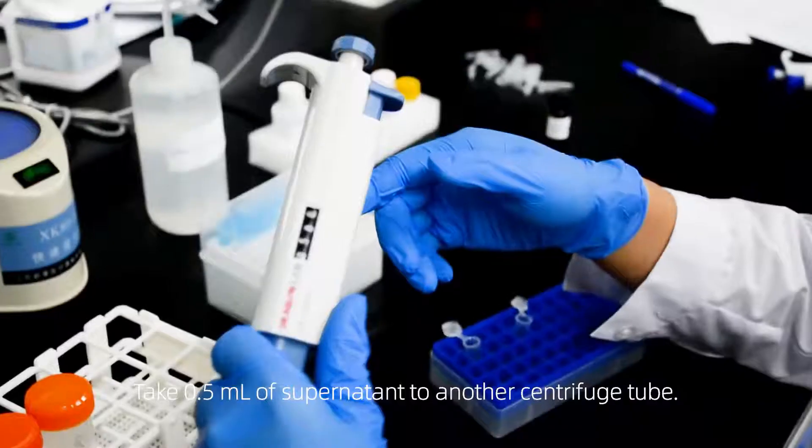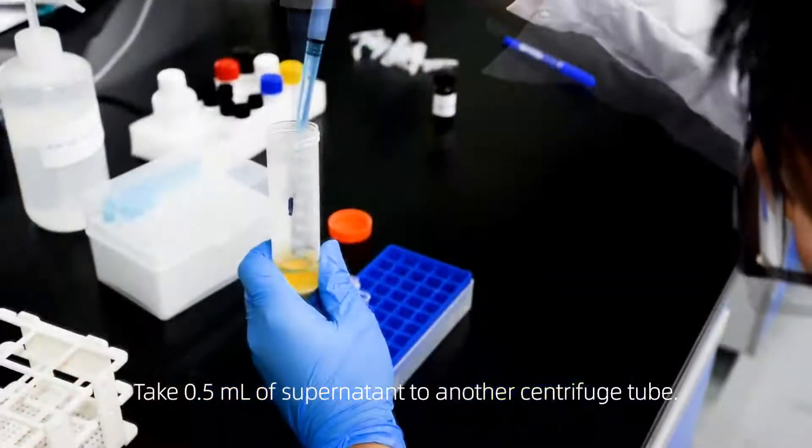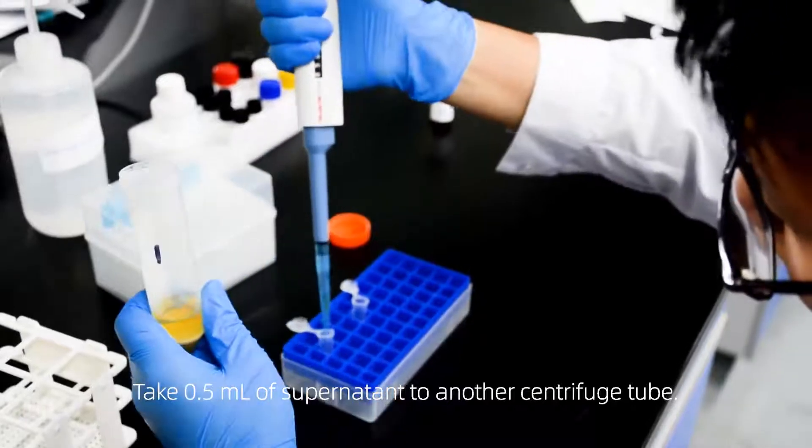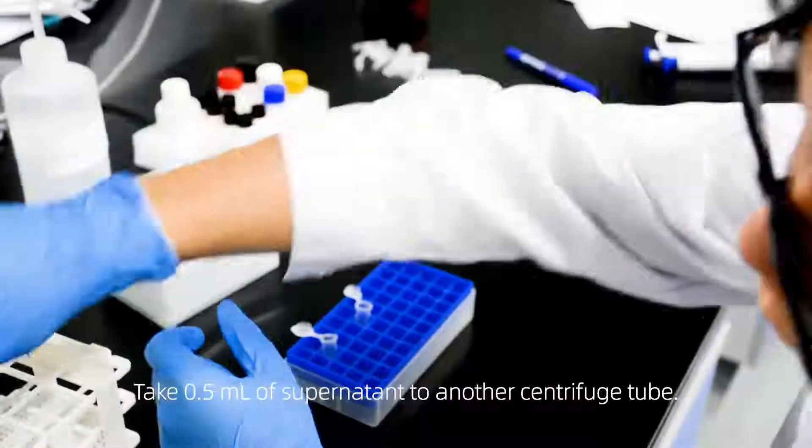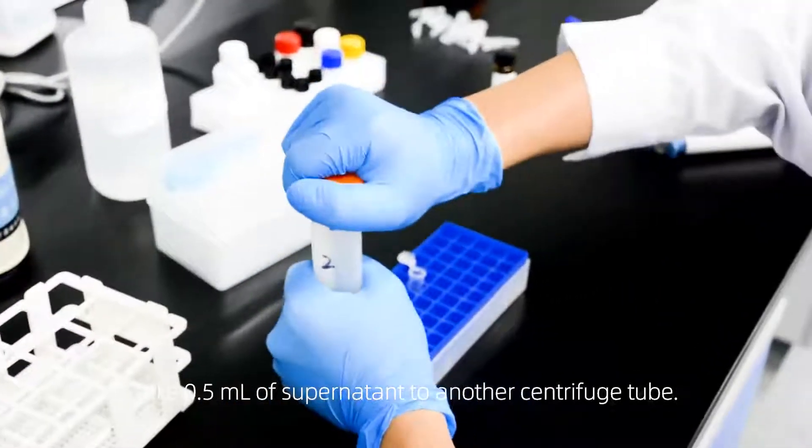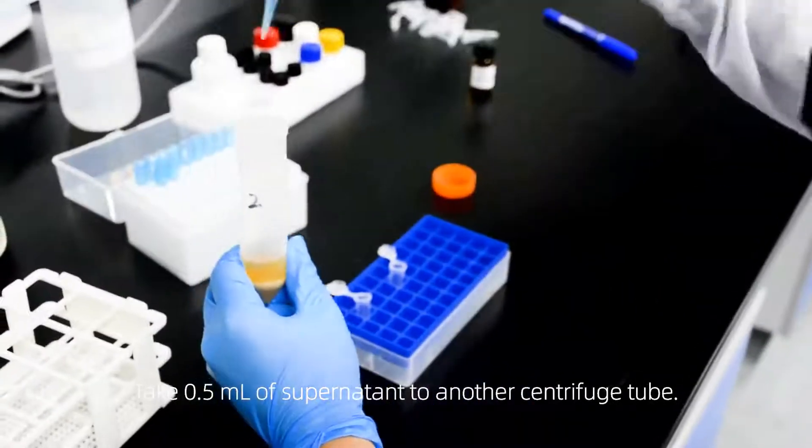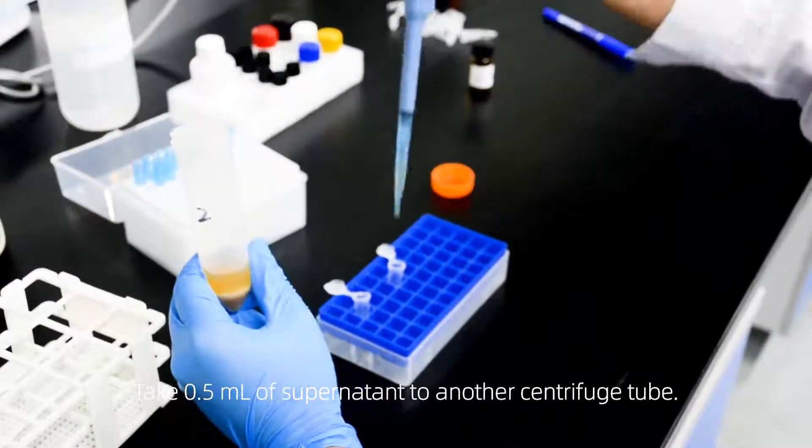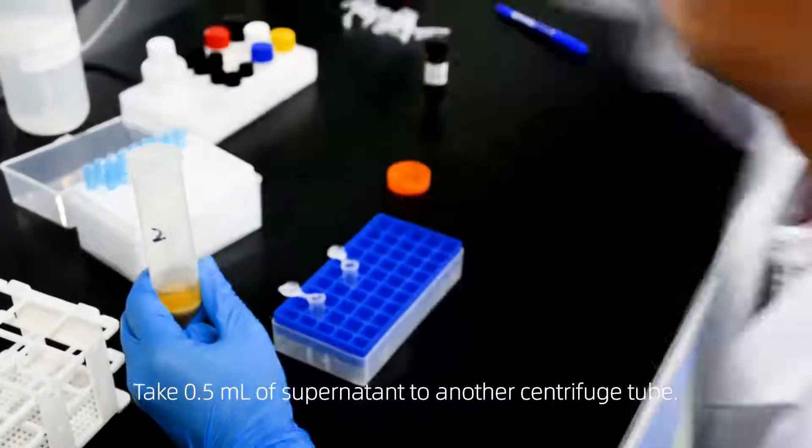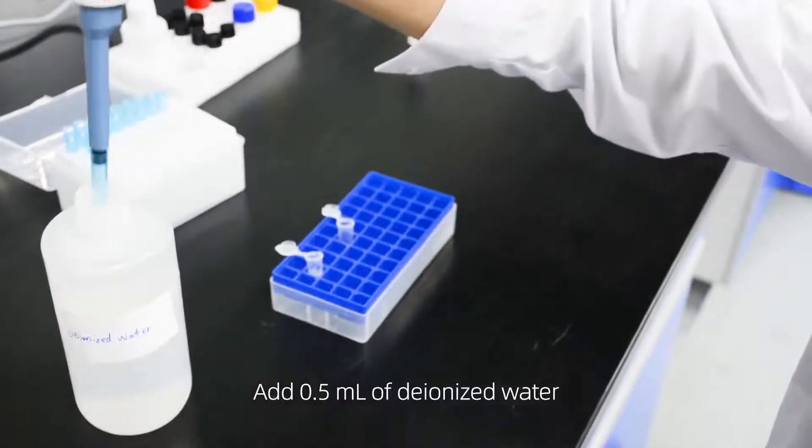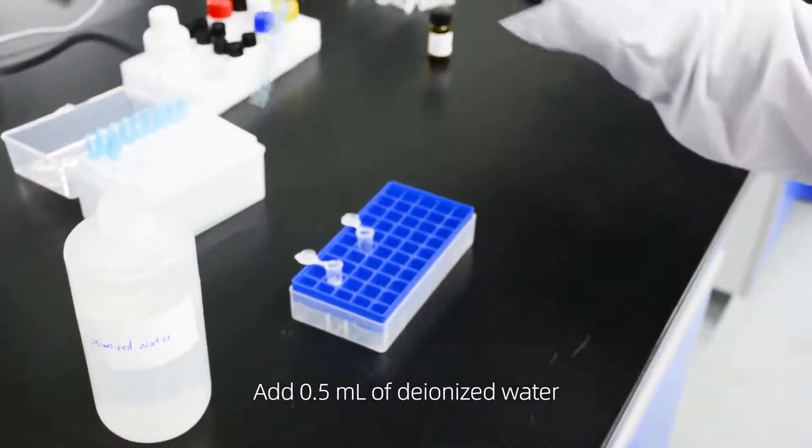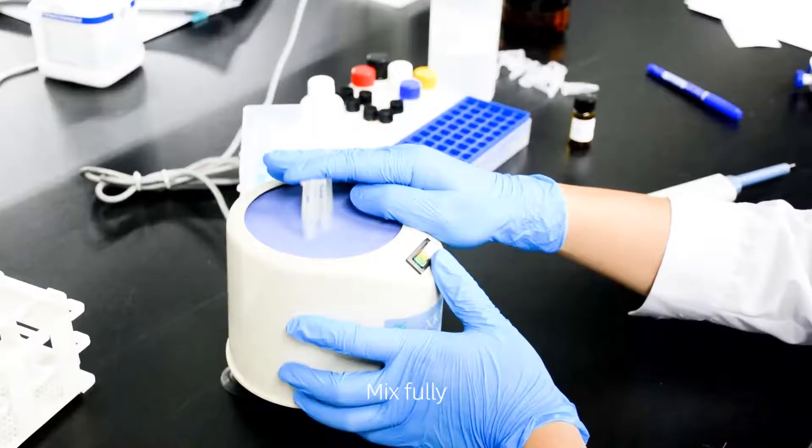Take 0.5 milliliters of supernatant to another centrifuge tube. Add 0.5 milliliters of deionized water and mix fully.